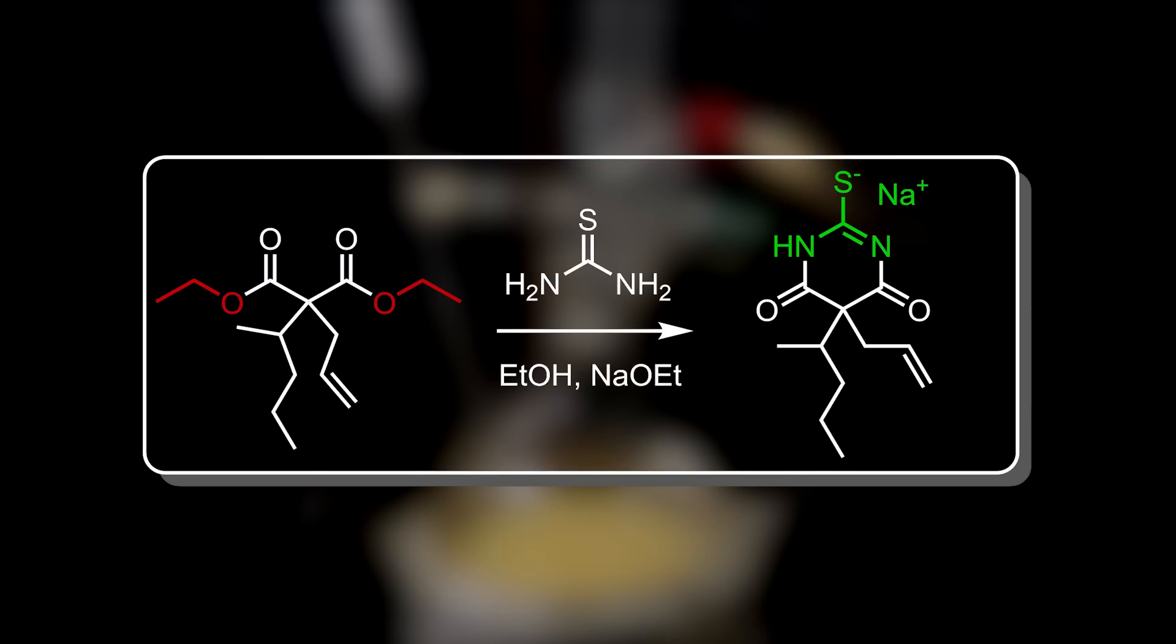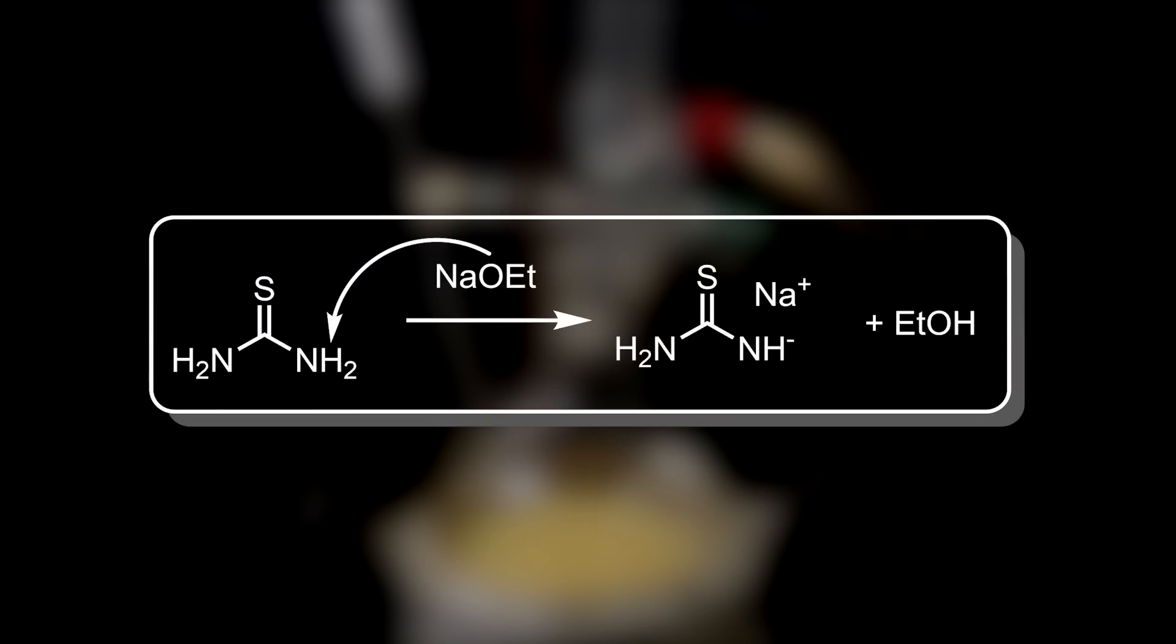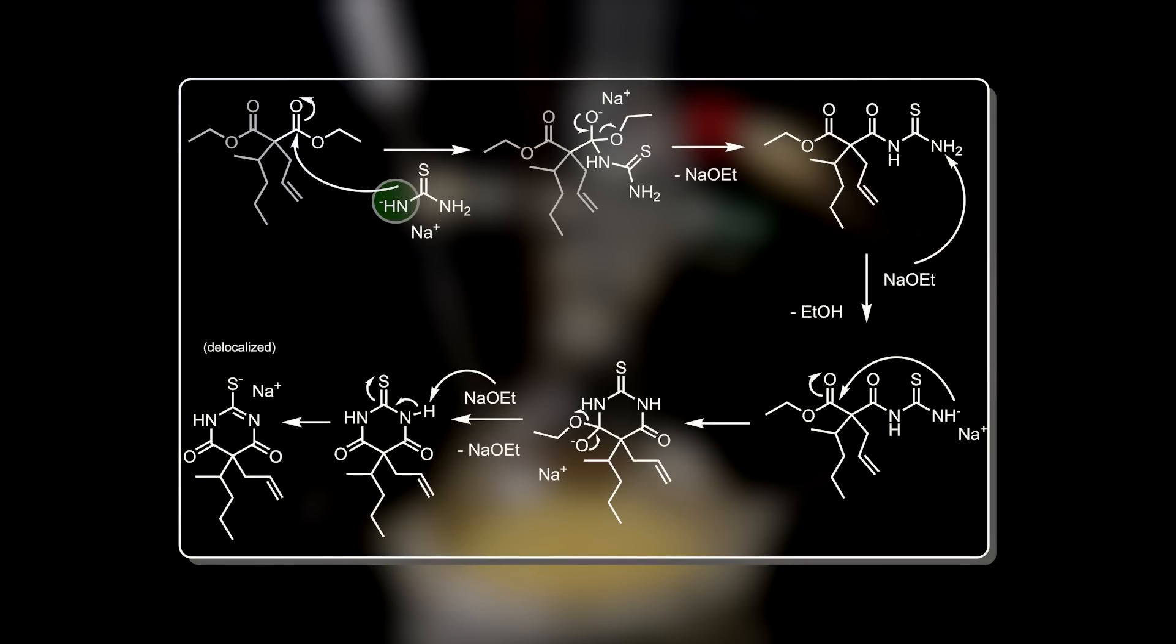In this reaction, the disubstituted malonate reacts with thiourea in the presence of a strong base to give the sodium salt of the barbiturate, thiamylal. The first thing that happens is deprotonation of thiourea by sodium ethoxide. This deprotonated form is a good nucleophile. It can attack one of the esters of the malonate, forcing a pair of carbonyl double bond electrons onto the oxygen. When this electron pair returns to form a double bond, it instead kicks off the ethoxide part to give back sodium ethoxide and this intermediate.